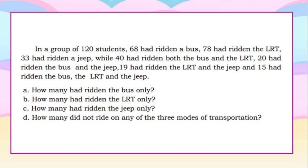Now let's have another example. In a group of 120 students, 68 had ridden a bus, 78 had ridden the LRT, 33 had ridden a Jeep, while 40 had ridden both the bus and the LRT, 20 had ridden the bus and the Jeep, 19 had ridden the LRT and the Jeep, and 15 had ridden the bus, the LRT, and the Jeep.